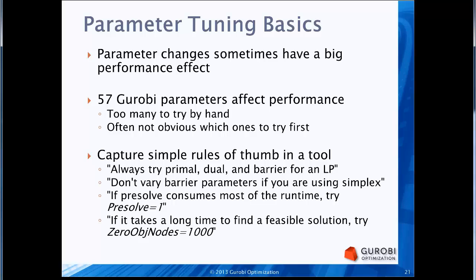What the tool is doing is capturing some rules of thumb we've developed over time. For an LP model, always try primal, dual, and barrier. Barrier is typically the fastest, but for any particular model it's always possible that primal or dual is faster. Another rule: if you're using simplex, don't bother trying any barrier parameters since they won't have any effect. Also, if the majority of runtime was consumed by pre-solve, try scaling back pre-solve. And if you're having trouble finding a feasible solution, we have heuristics designed to work extra hard at finding one.